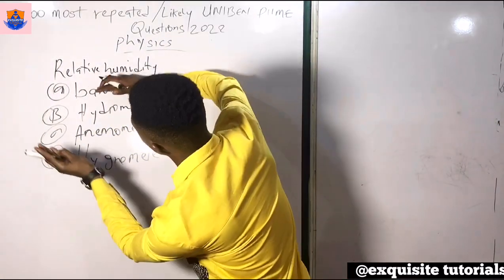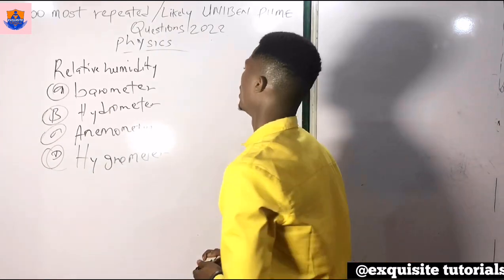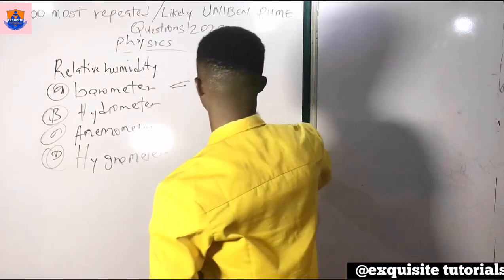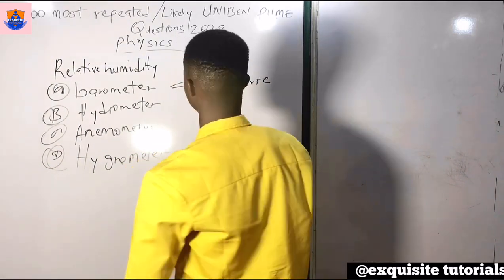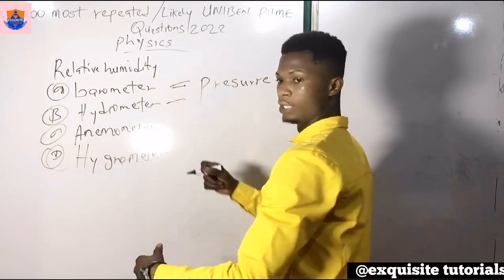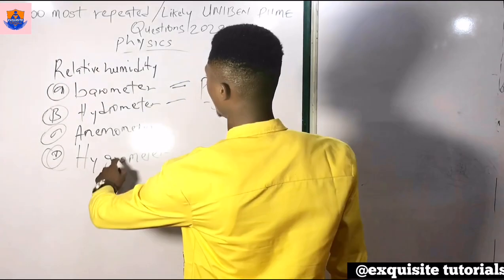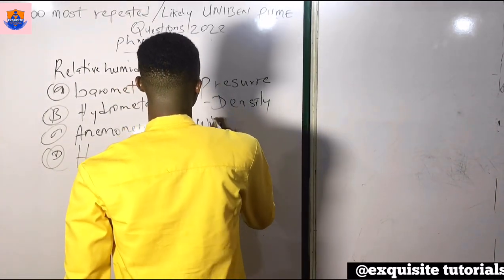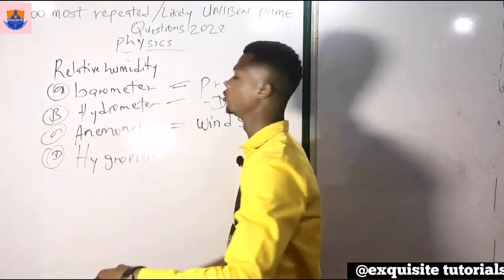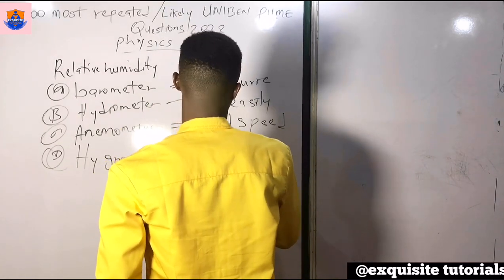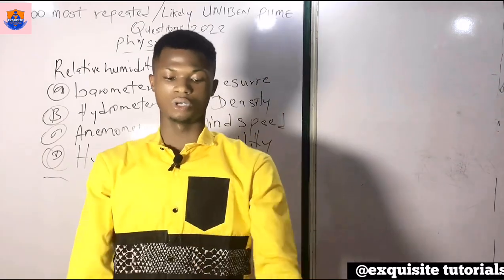We'll look at all these measuring instruments so that any related question can be tackled easily. A barometer is used for measuring pressure. A hydrometer — note the word 'hydro' — is used for measuring relative density. An anemometer is used for measuring wind speed. A hygrometer is used for measuring relative humidity. So the correct answer is option D.